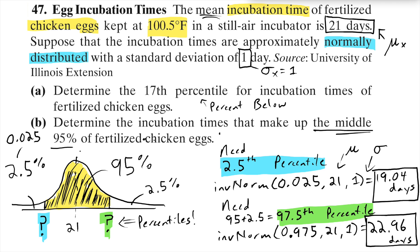For number 47, both parts required using INVNORM because they both wanted to know the value at a given percentile. Part A just gave me the percentage directly. For Part B, I had to be more careful and realize the middle 95% means I'm really looking for the 2.5th and 97.5th percentiles. I hope that was helpful — I'll see you next time.